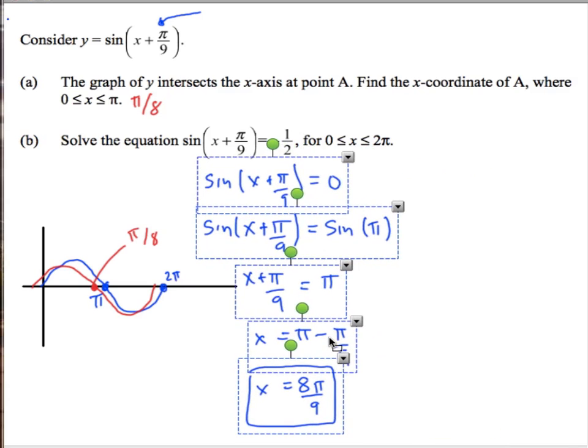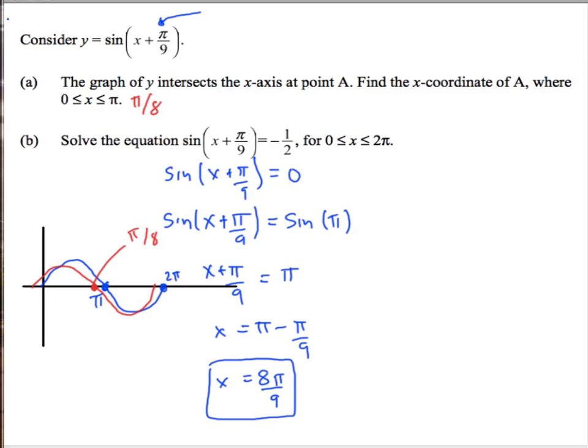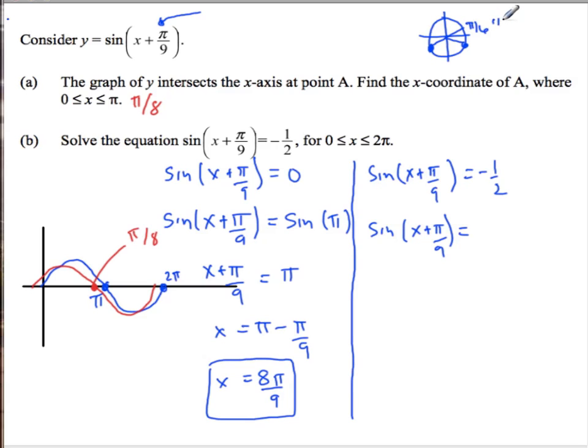And then we can take that exact same technique for the negative 1 half. So we say sine x plus pi over 9 equals negative 1 half. Sine x plus pi over 9 equals, okay, sine is negative 1 half. So our unit circle up here, when is sine negative 1 half? It's right here and right here, which is, let's see, that's pi over 6 plus pi. So that's 7 pi over 6, sine of 7 pi over 6.